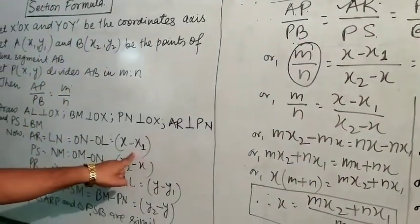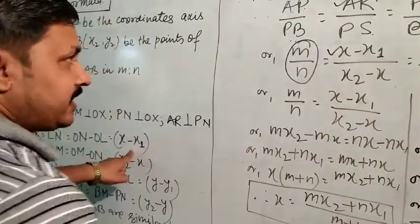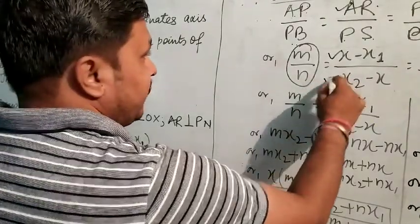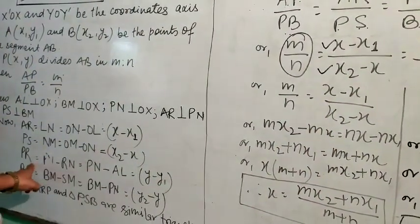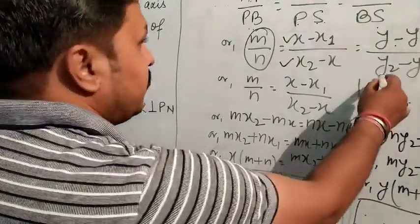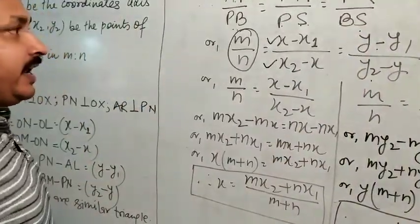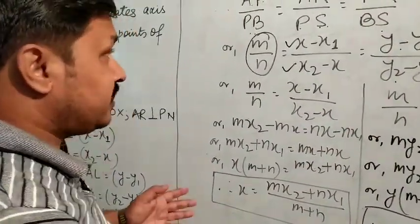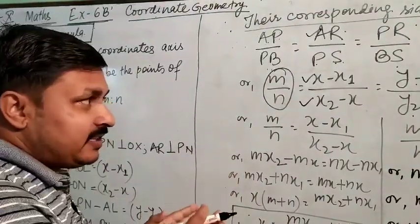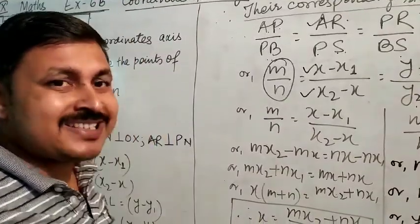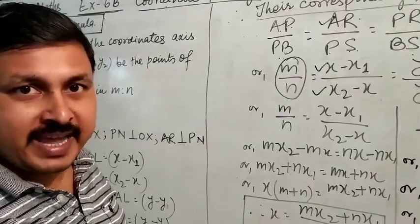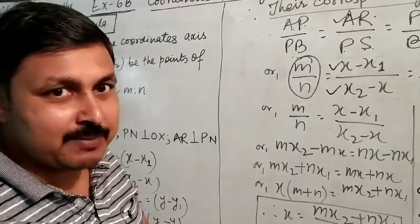So we find AR equals x minus x1, and PS equals x2 minus x, and PR equals y minus y1, and BS equals y2 minus y. We use this ratio, first with x and then with y, because in coordinate geometry the P point has two coordinates — one is x and another is y — so we find them separately.